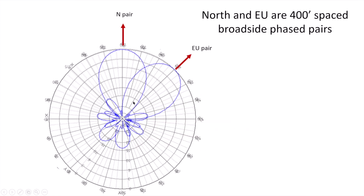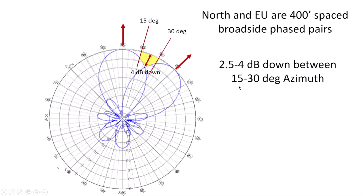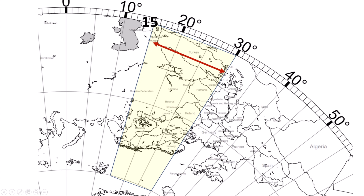If I put those same plots from 4NEC2 on this map, my north pair is looking like this and my European pair is looking like this — and we kind of end up with this gap. At the peak it's down almost four and a half dB right in this notch between the two. It's a range of two and a half to four dB down between 15 degrees and 30 degrees. This is a great circle map centered on my QTH, with the bearing to Europe between 15 and 30 degrees highlighted.